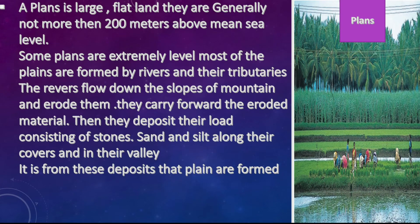A plain is a large flat land. Plains are generally not more than 200 meters above sea level. Some plains are extremely level. Most plains are formed by rivers and their tributaries. The river flows down the slopes of mountains and erodes them, carrying forward eroded materials. They then deposit their load consisting of stone, sand, and silt along their course and in their valleys. It is from these deposits that plains are formed.